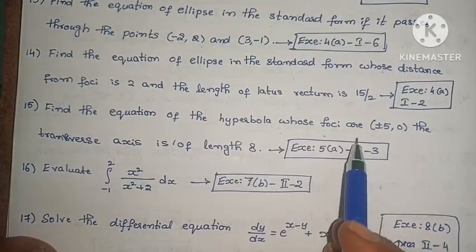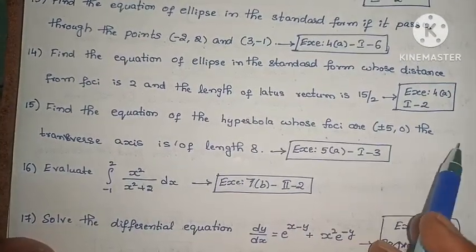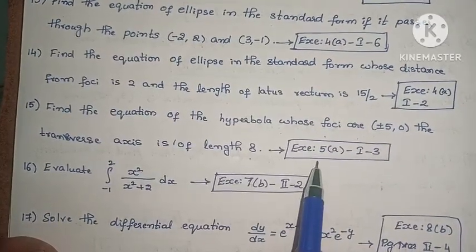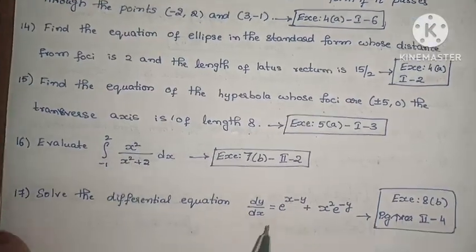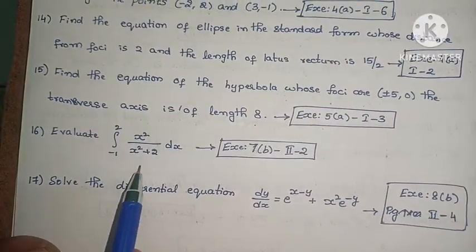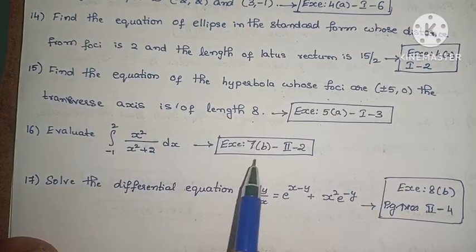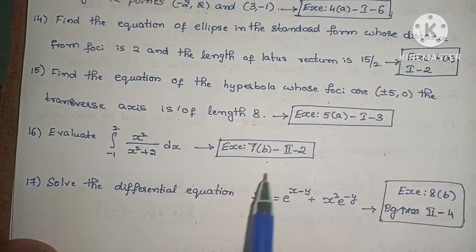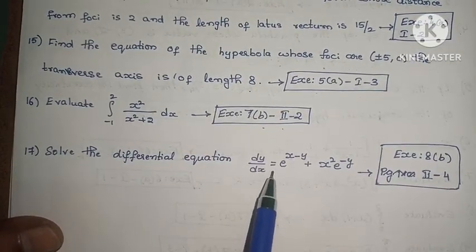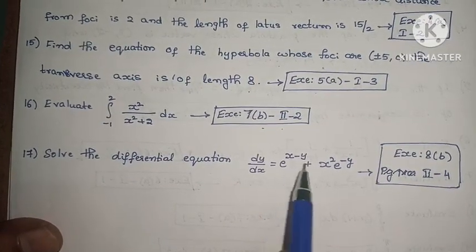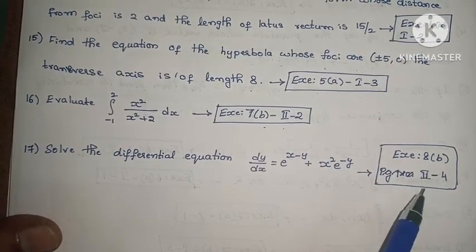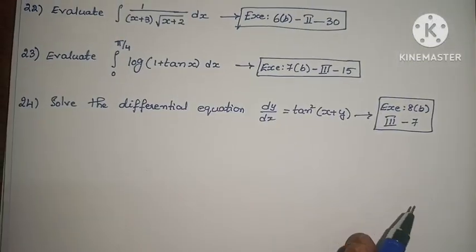Next: find the equation of the hyperbola whose foci are (±5, 0) and the transverse axis is of length 8. This is question 5, first exercise, third problem. Next: evaluate ∫₋₁² x²/(x² + 2) dx. This is question 7B, second exercise, second problem. Next: solve the differential equation dy/dx = e^(x-y) + x²·e^(-y). This is question 8B, second exercise, fourth problem.